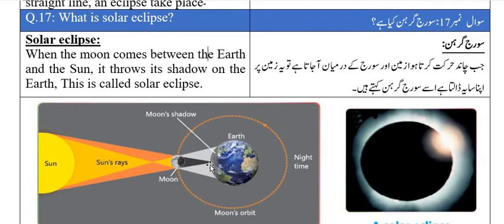When the moon comes between the earth and the sun, the moon is between the sea and the sun. This creates a shadow on the earth. This is called solar eclipse.